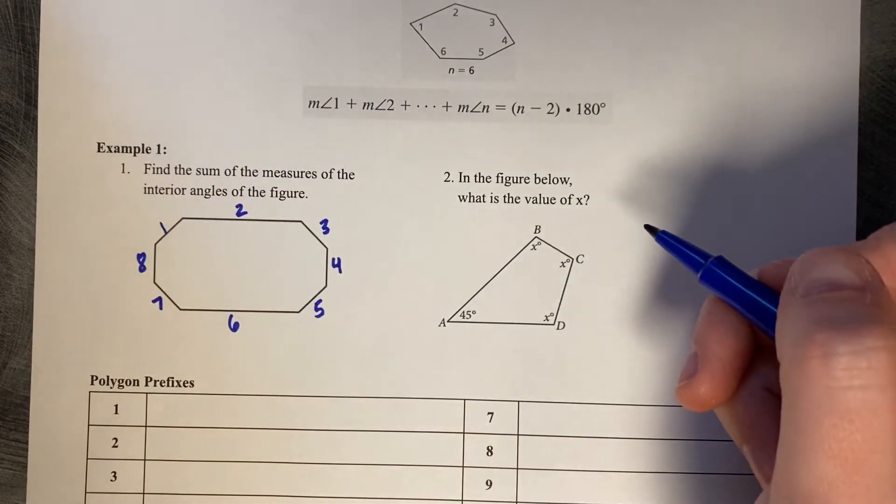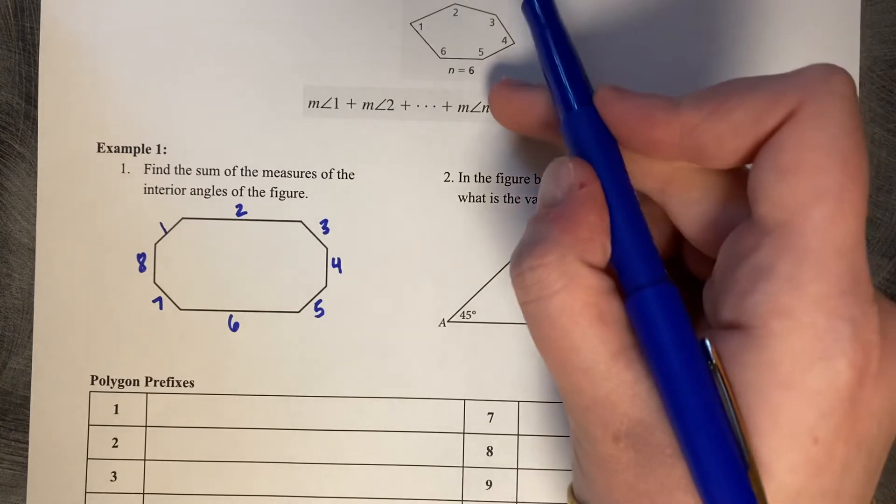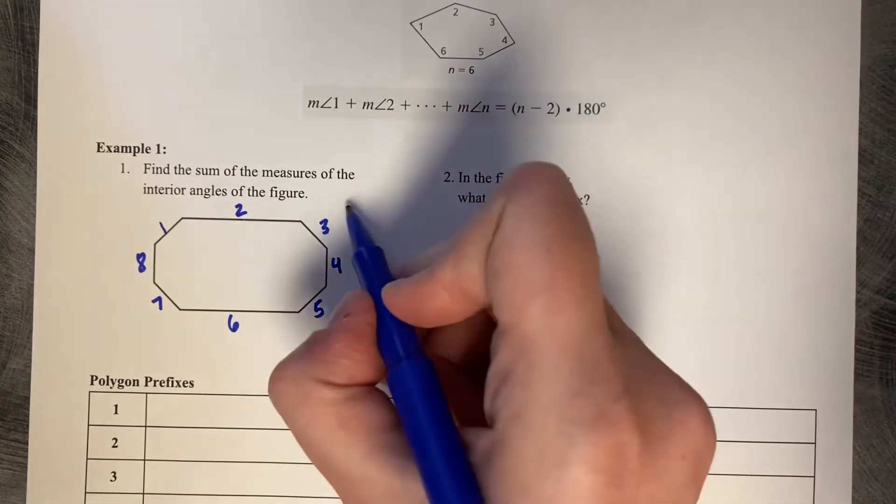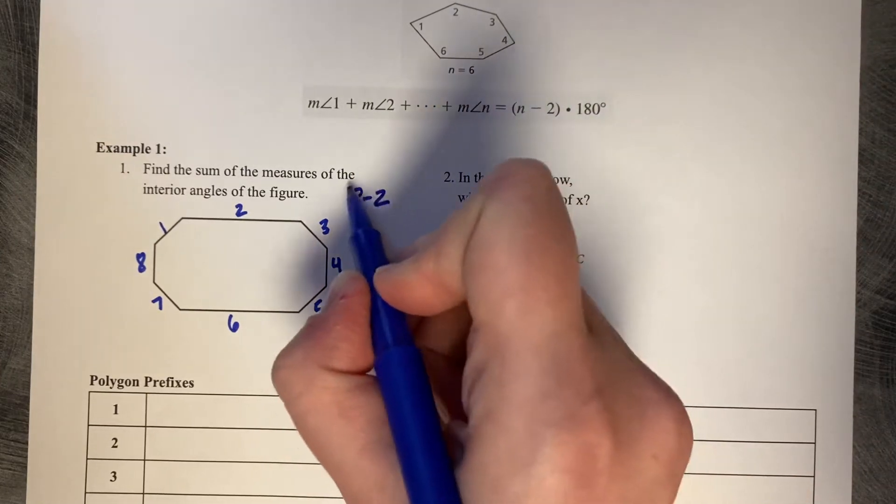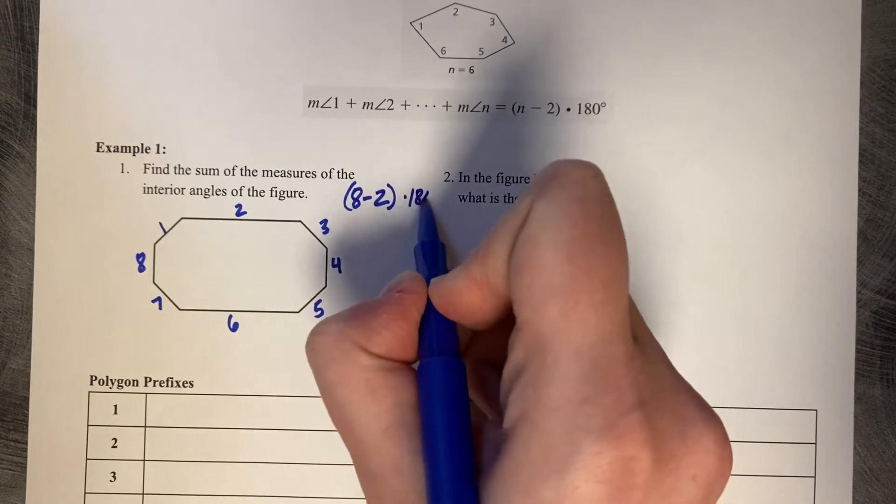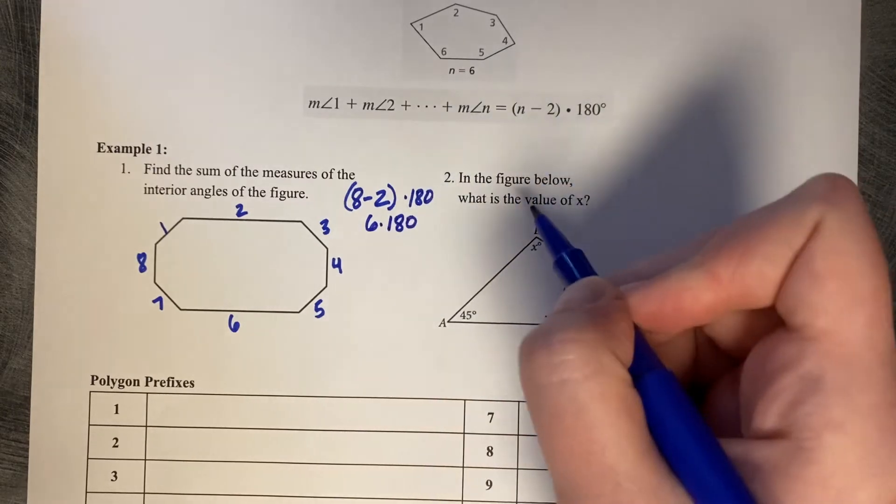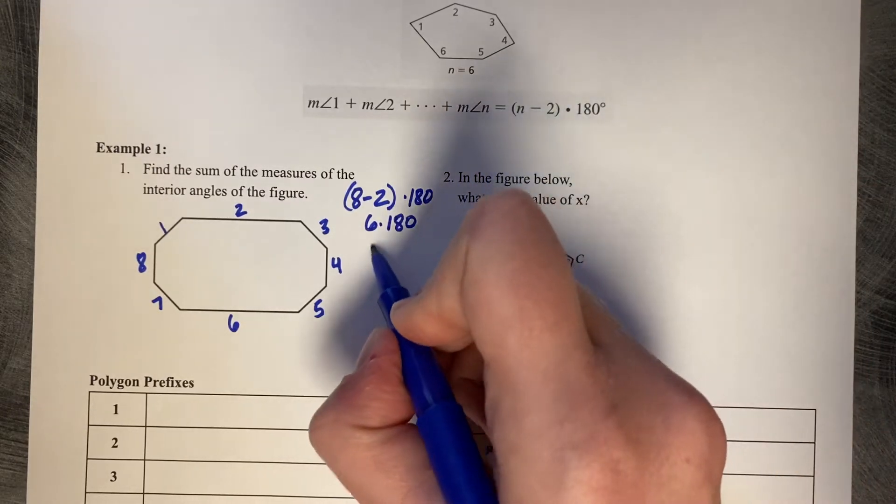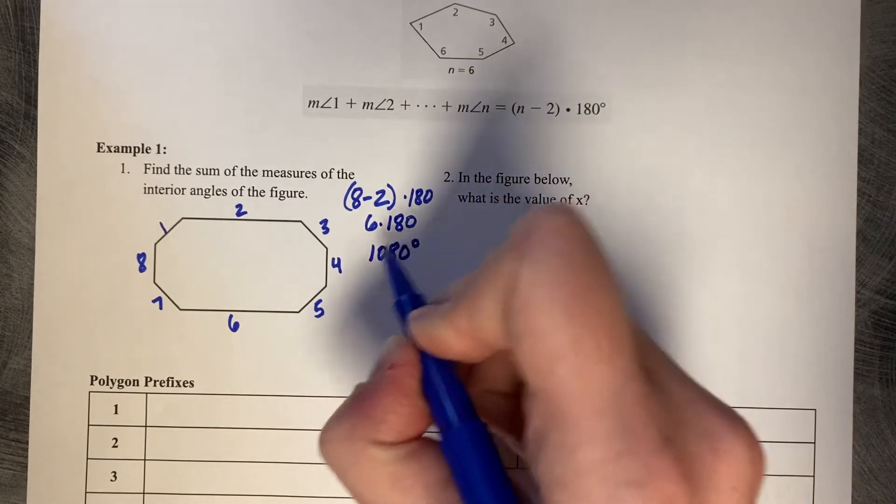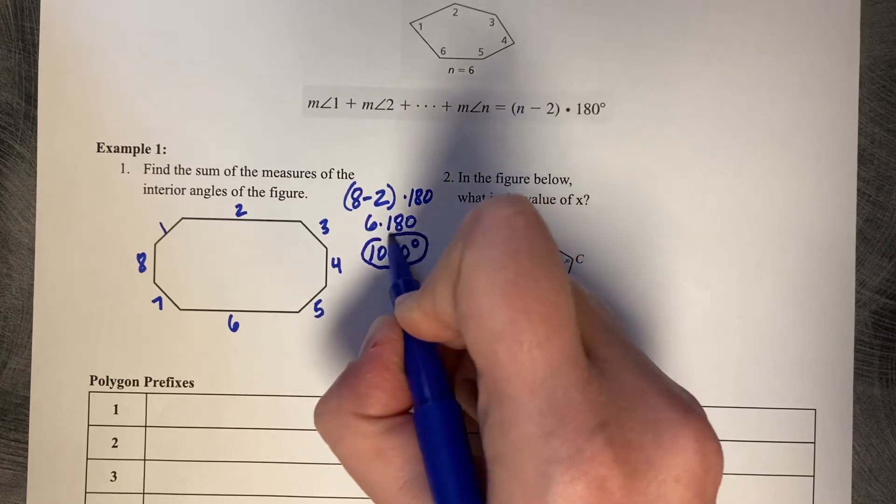This is an eight-sided figure, so if we follow the pattern, the number of sides is eight minus two times 180, or six times 180, and six times 180 is 1080. So 1080 degrees.